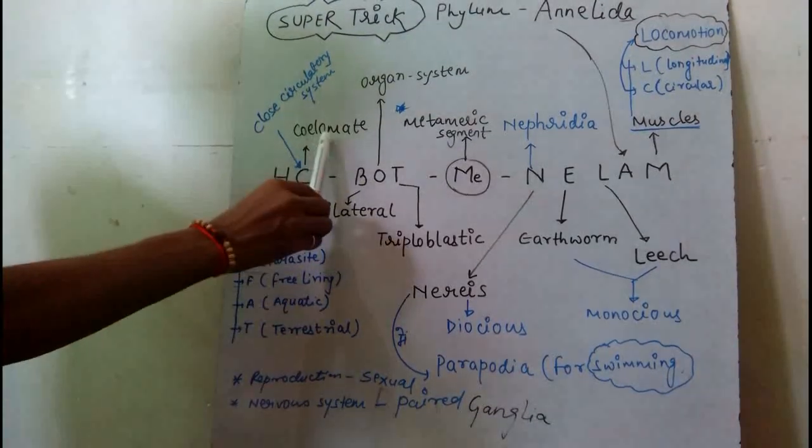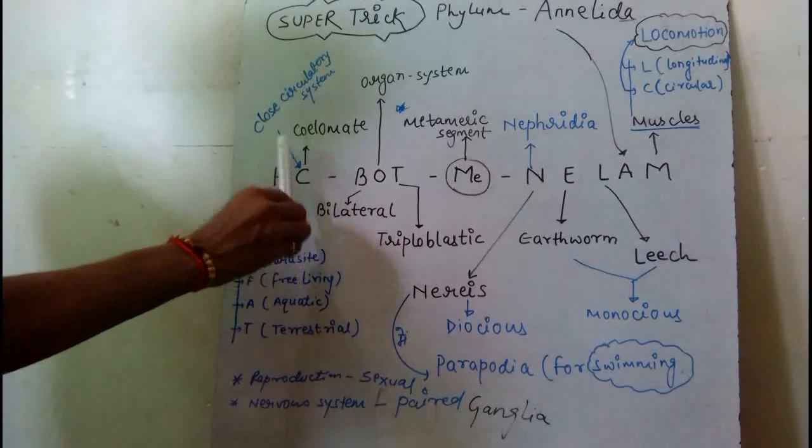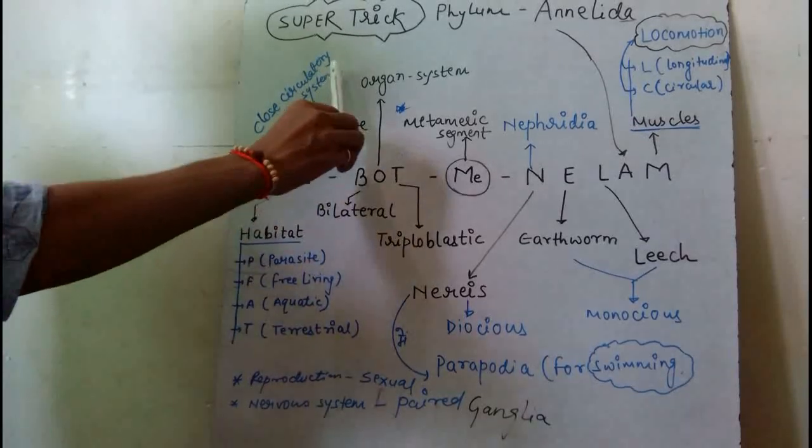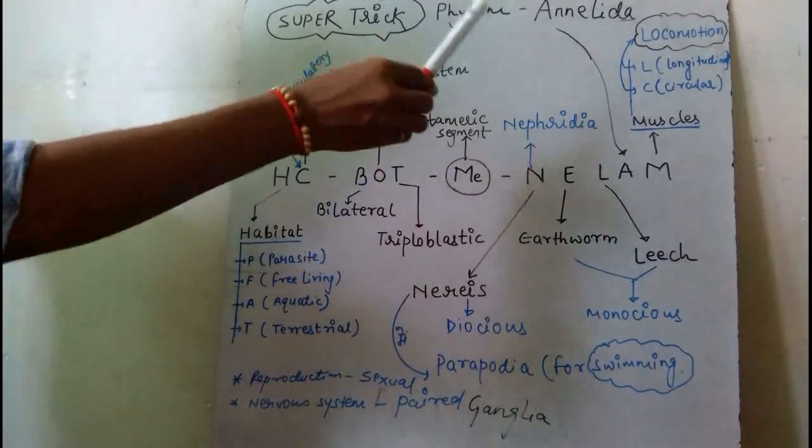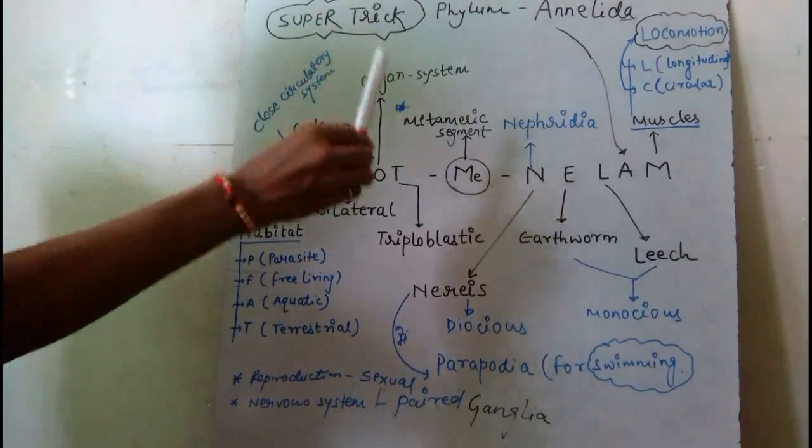There is a seed in the mnemonic. The seed represents the coelomate condition, and also represents the closed circulatory system. Remember it!